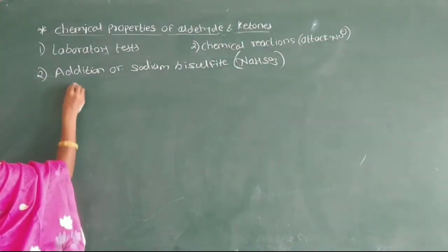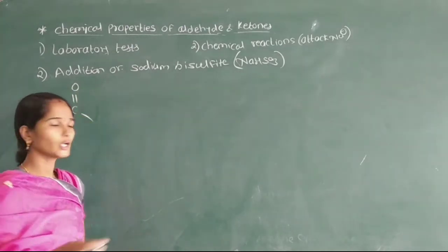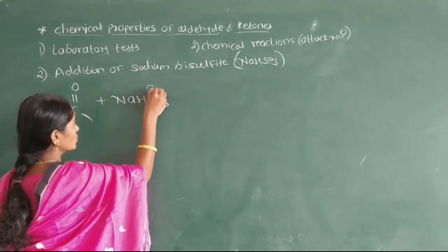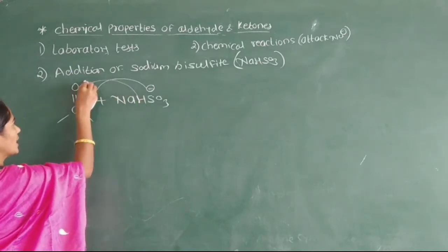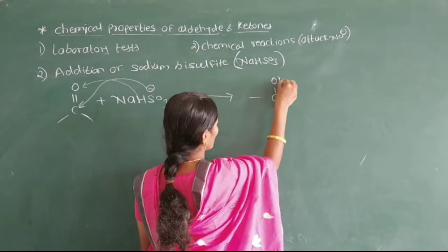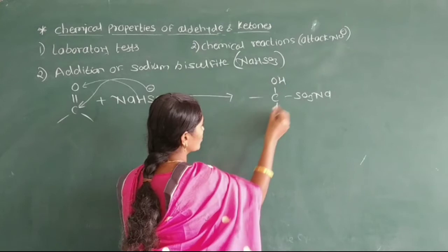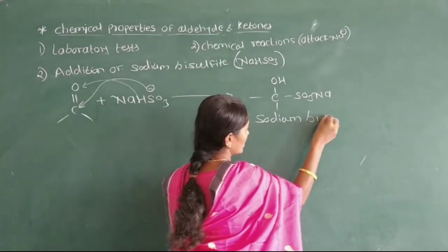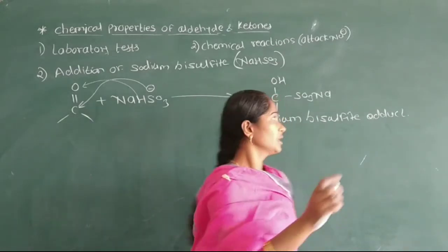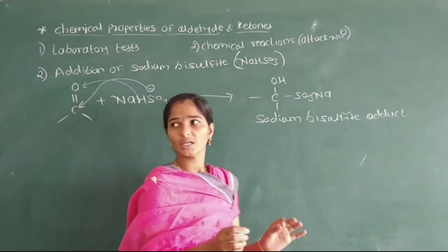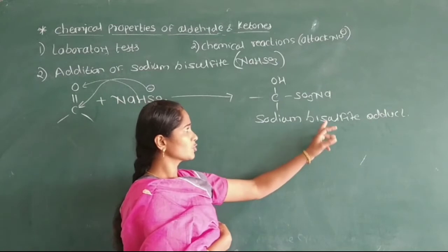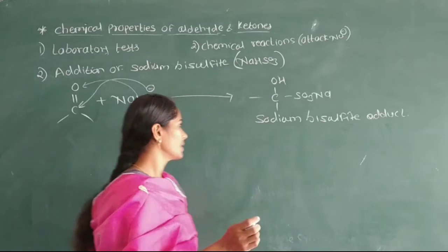Here, the carbonyl compound — aldehyde or ketone — reacts with a saturated solution of sodium bisulfite (NaHSO₃). The SO₃⁻Na⁺ part adds to the carbonyl carbon and the hydrogen adds onto the oxygen, giving formation of a crystalline precipitate of the sodium bisulfite adduct. This sodium bisulfite adduct is a crystalline precipitate and is an addition compound.